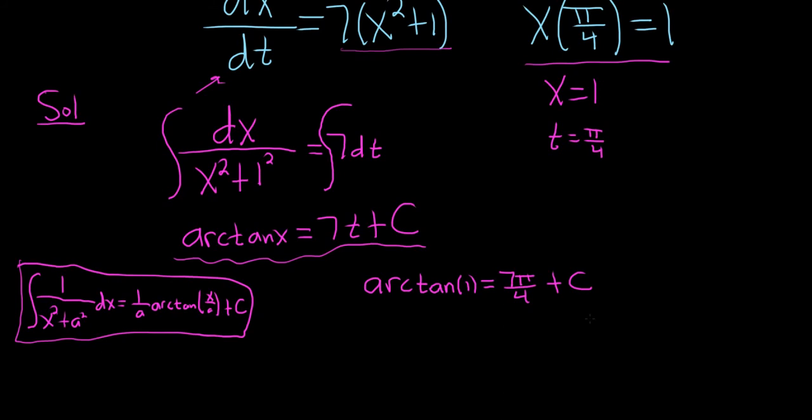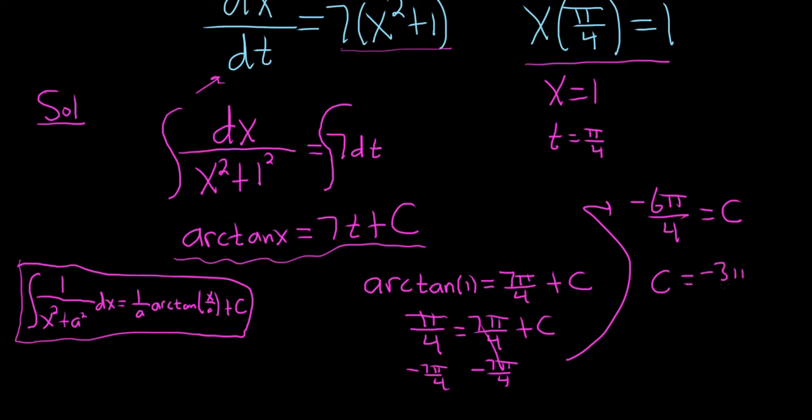The arctangent of 1 is pi over 4. So this is pi over 4 equals 7 pi over 4 plus C. We can solve for C now by subtracting 7 pi over 4. So you do minus 7 pi over 4 minus 7 pi over 4. That gives us negative 6 pi over 4 equals C. So C is actually negative 3 pi over 2.